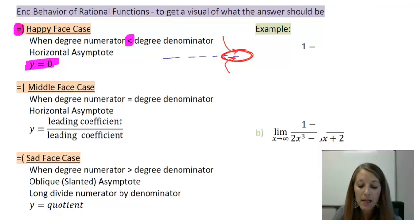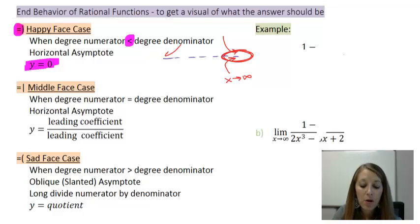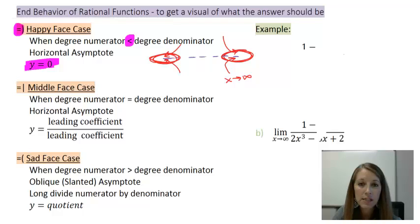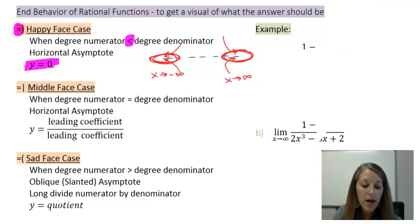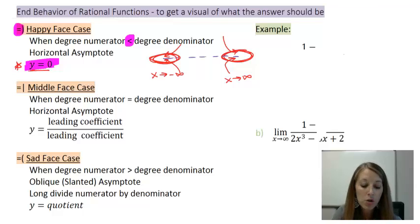That's the right-hand side of the graph, or as x is approaching infinity. The same thing is going to happen on the left — it can approach the horizontal asymptote from the top or the bottom as x is approaching negative infinity. So if we have a horizontal asymptote at y equals zero, that means our end behavior or our infinite limits are also going to be exactly equal to our horizontal asymptote, which is y equals zero.